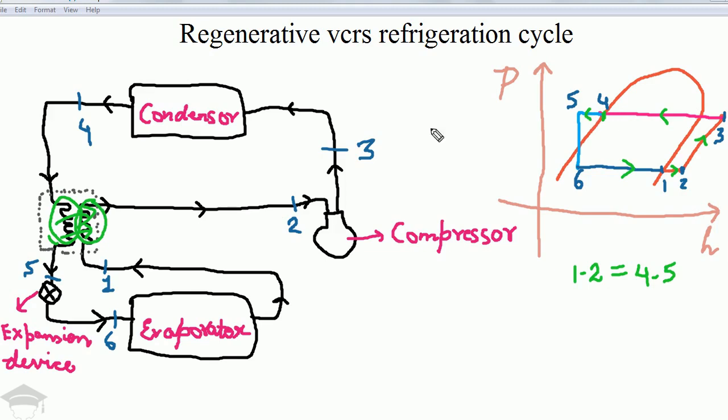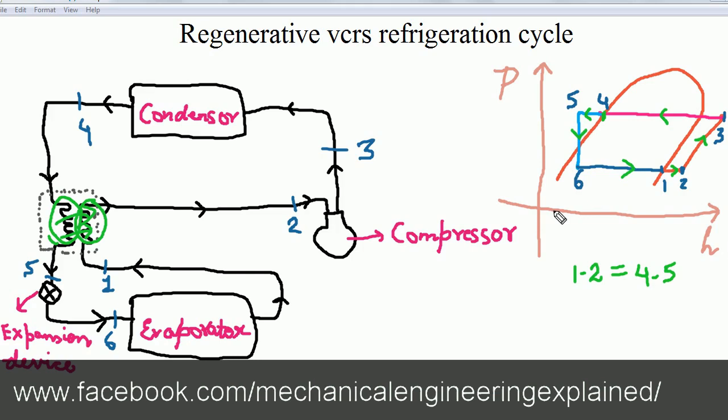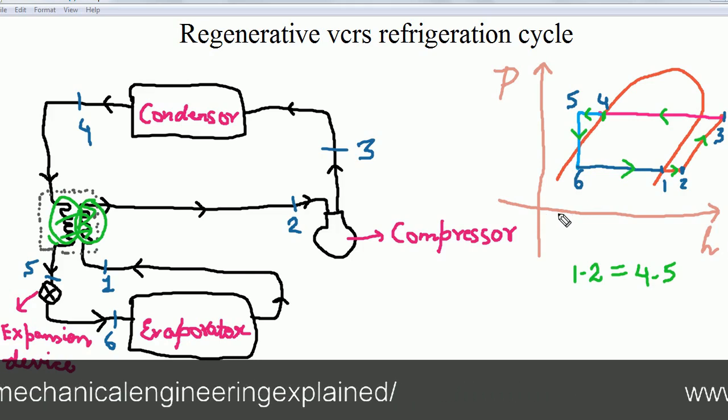From 4 to 5, it is the subcooling. And 5 to 6 is an isenthalpy process where the enthalpy remains constant in the expansion device or the throttling device. So 5 to 6 is the throttling process. You should remember that ideally, if we